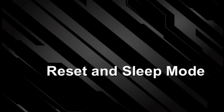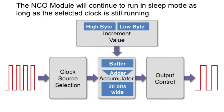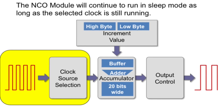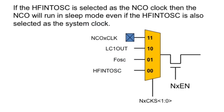Now we'll cover sleep mode operation and the effects of a reset. The NCO module will continue to run in sleep mode as long as the selected clock is still running. Typically, the oscillator is stopped during sleep mode to reduce current draw. For applications that need to keep the NCO running while in sleep mode, the high frequency internal oscillator clock is the best choice. If the high frequency internal oscillator is selected as the NCO clock, the NCO will run in sleep mode, even if it is also selected as the system clock.